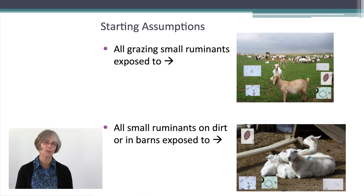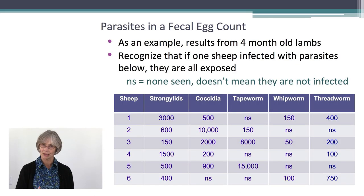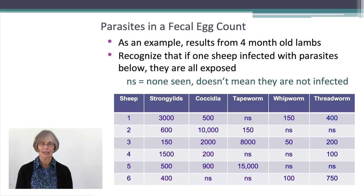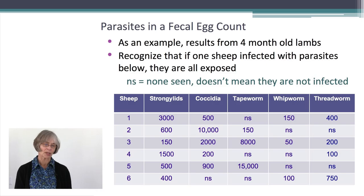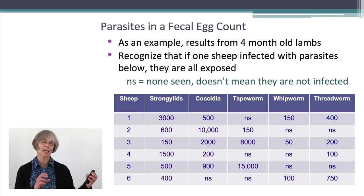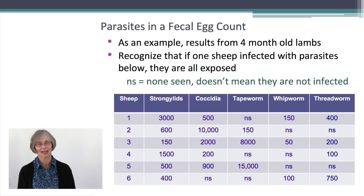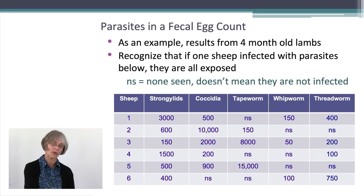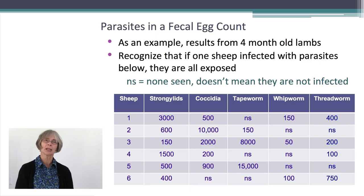You have to assume that all small ruminants are exposed to these parasites. When you look at results from a diagnostic lab, you might receive results with all these categories of parasites mentioned, with egg counts for all of them. Some animals may be recorded as NS, meaning none seen. But if one animal has whipworm eggs in their manure, they're basically all exposed. This isn't a situation where we're seeing infections in some animals and not others — more likely you're seeing eggs coming out in some animals and not others. So for tapeworms, whipworms, and threadworms especially, interpretation of egg counts is not very useful.